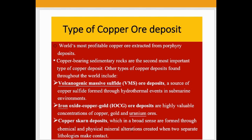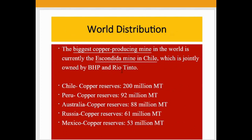The biggest copper-producing mine in the world is currently the Escondida mine in Chile, which is jointly owned by BHP and Rio Tinto. Chile has copper reserves of 200 million tons, Peru has 92 million tons, Australia has 88 million tons, Russia has 61 million tons, and Mexico has 53 million tons.